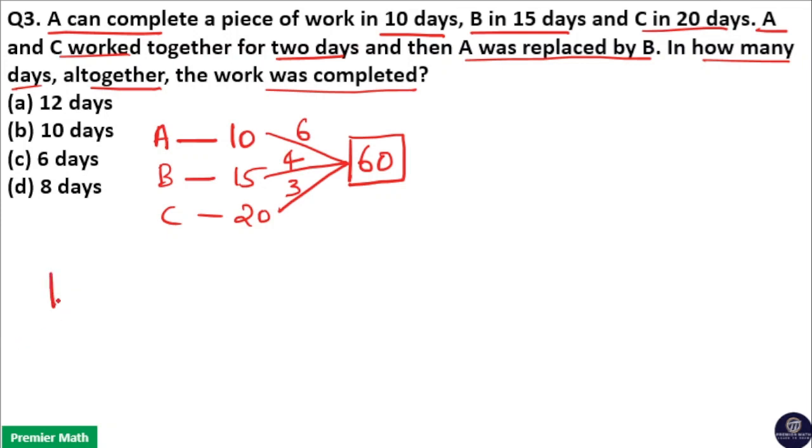Here question clearly says first A and C worked together for 2 days. Then A was replaced by B and B and C completed the remaining work. Here you can see efficiency of A and C in one day is 6 plus 3, 9 unit.